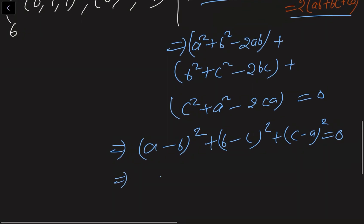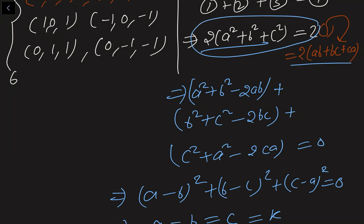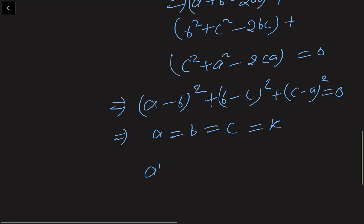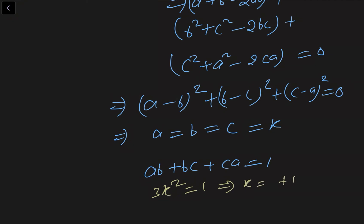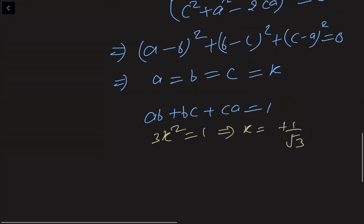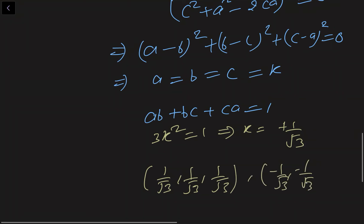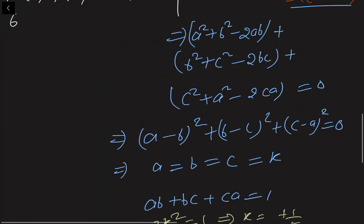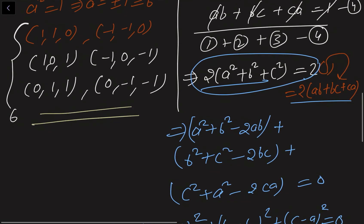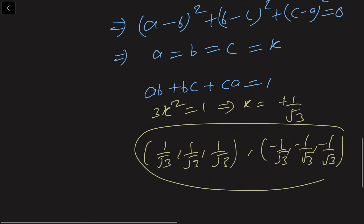Since a sum of squares equals zero, each term must be zero, so A = B = C. Let A = B = C = K. Using AB + BC + CA = 1 gives 3K² = 1, so K = ±1/√3. This yields two more solutions: (1/√3, 1/√3, 1/√3) and (−1/√3, −1/√3, −1/√3). Combined with the 6 solutions from Case 1, there are 8 solutions in total. Hope you like the solution.